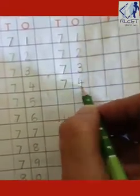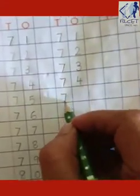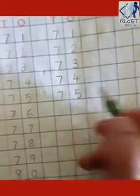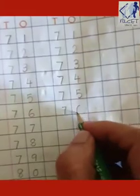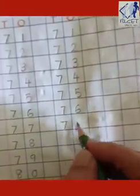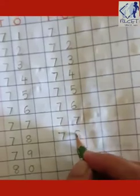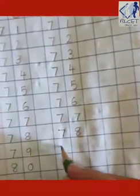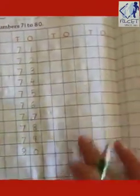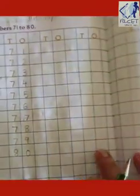Slanting line and slanting line. 7-4, 74. Yes. 7-5, 75. 7-6, 76. 7-7, 77. 7-8, 78. 7-9, 79. 8-0, 80. Yes. Like this, you have to finish this line also, and this line also. Okay, children.